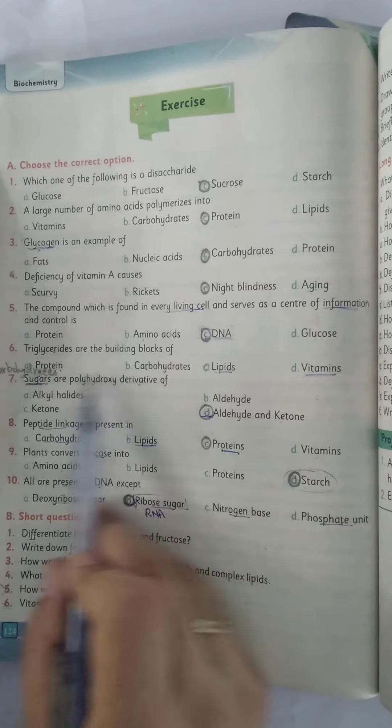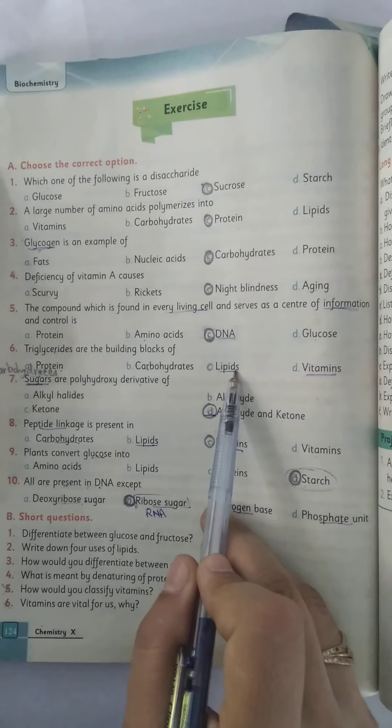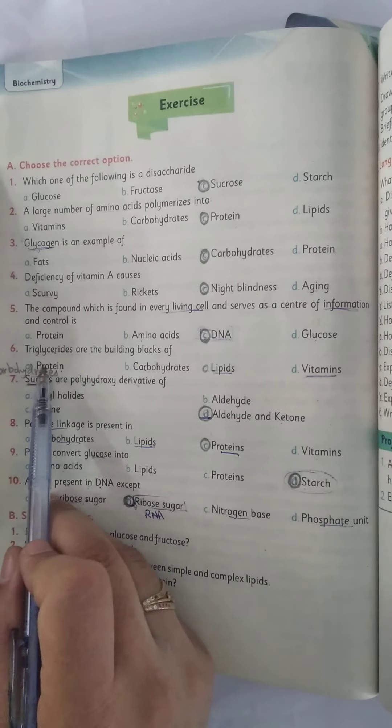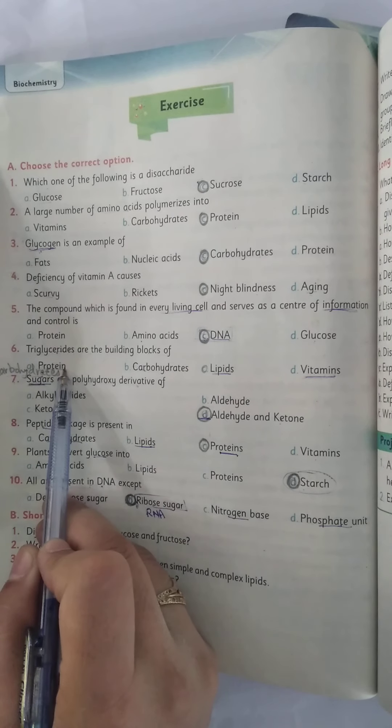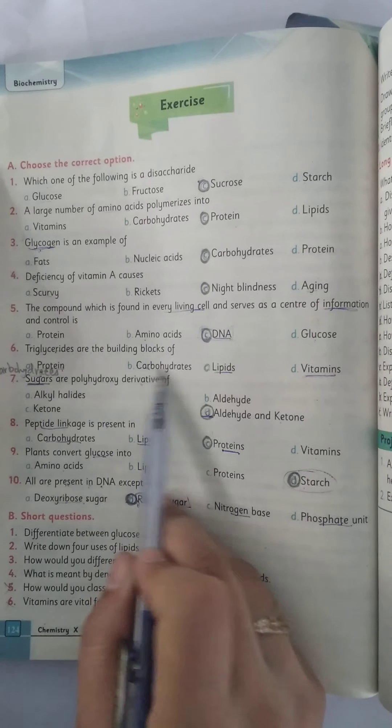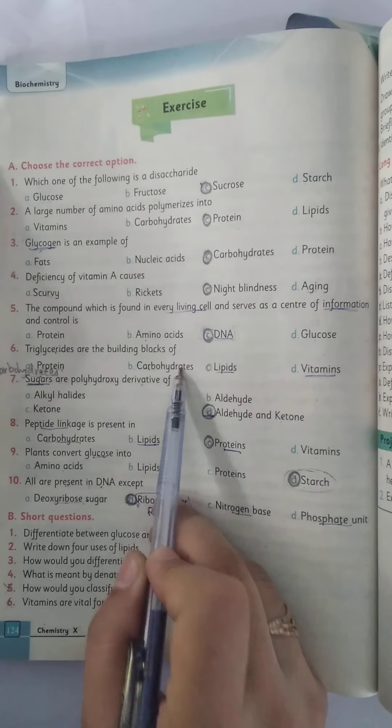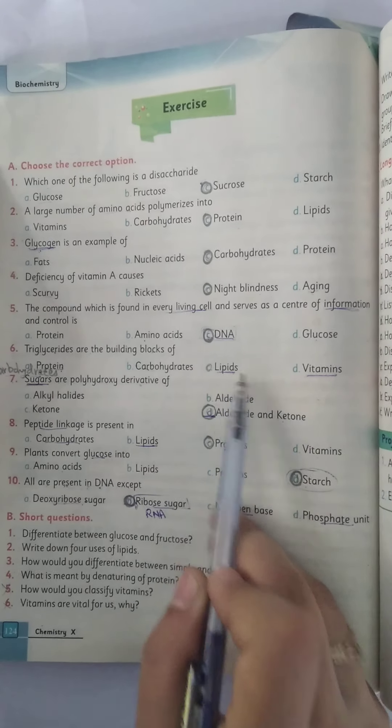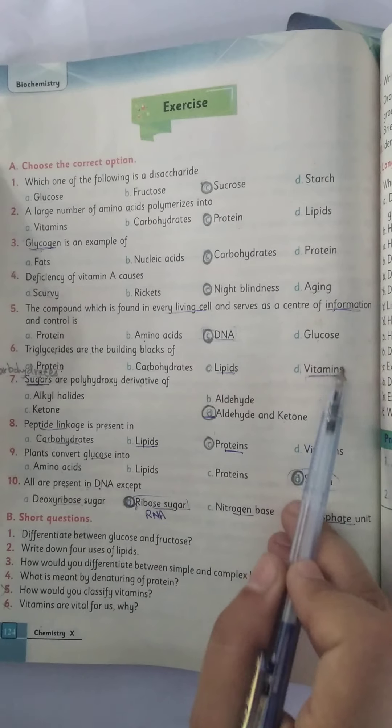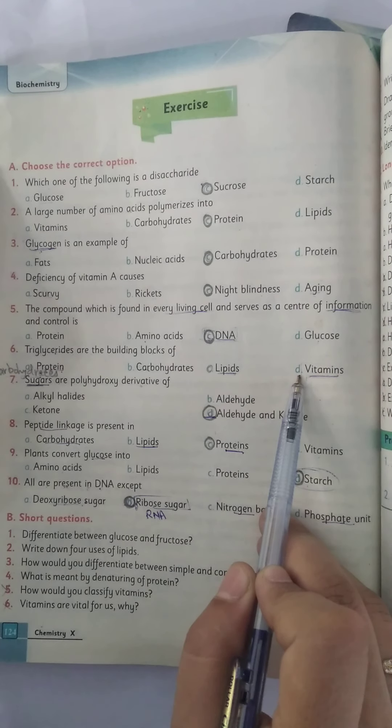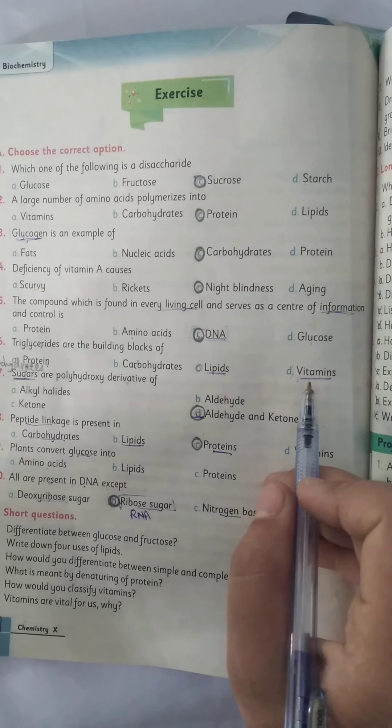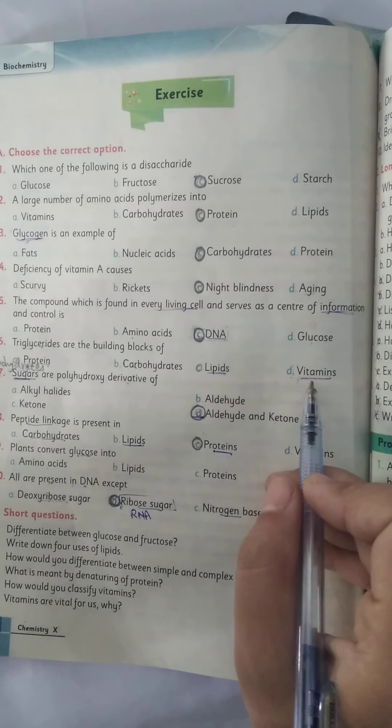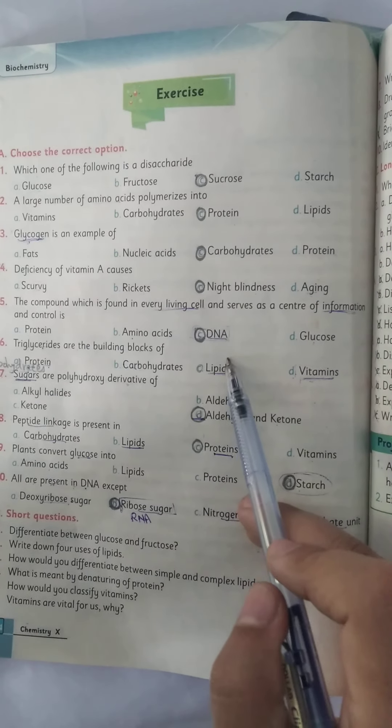Triglycerides are the building blocks of proteins, carbohydrates, lipids, vitamins. As we know that proteins are made up of amino acids, carbohydrates from monosaccharides, lipids are formed by triglycerides, and vitamins—these are fat or water-soluble molecules. So the correct option is lipids.